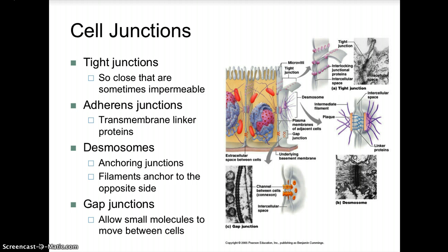Adherent junctions, or adhesion junctions, are transmembrane linker proteins where the adjacent plasma membranes do not touch but are held together by extracellular filaments firmly attached to cytoplasmic plaques composed of dense protein materials. Desmosomes are anchoring junctions where the filament anchors to the opposite side. Desmosomes joining heart muscle cells prevent the cells from tearing apart during contractions, and similarly, desmosomes in the cervix prevent it from ripping during childbirth.